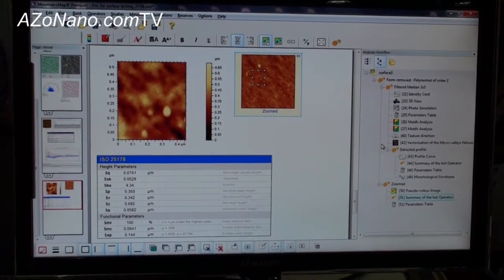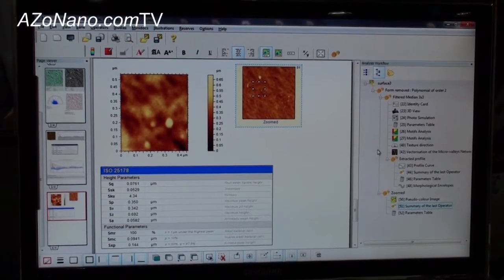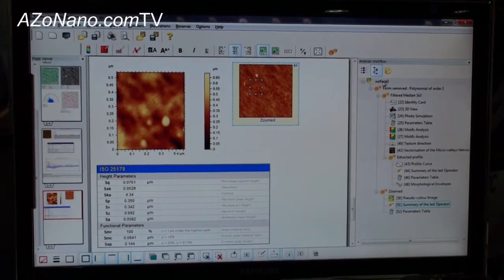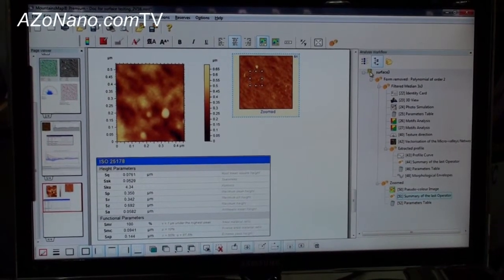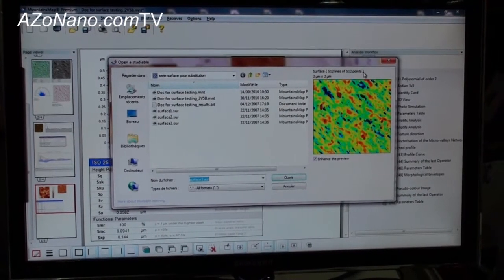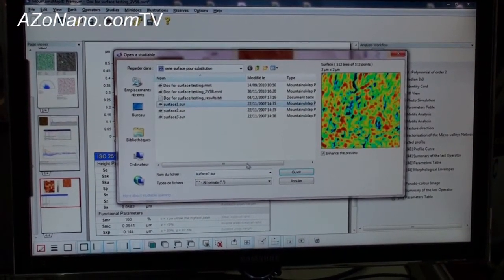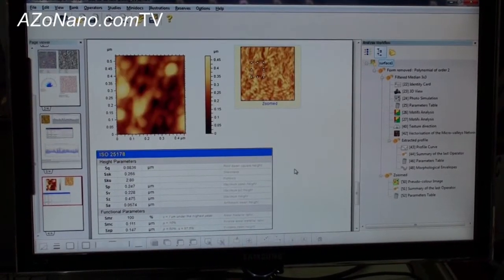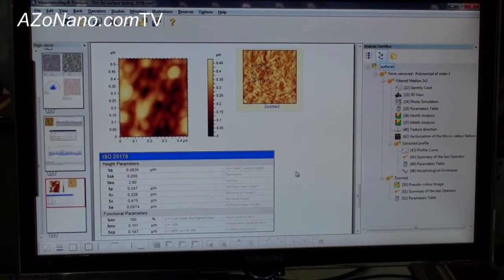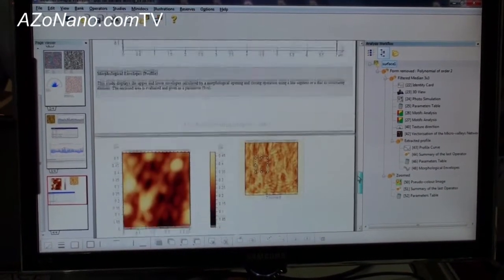But the real magic thing from the mountain software technology is the interactivity with the file itself. So as you can see here, I was using the surface number three. If I double click on the surface number three, I can switch to another one, maybe the surface number one, and then the document is automatically recalculated with a new surface. So we can check it.